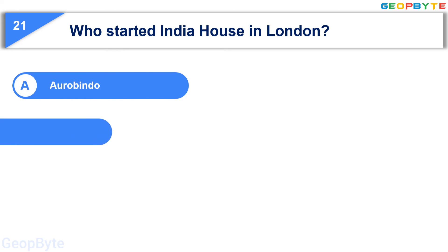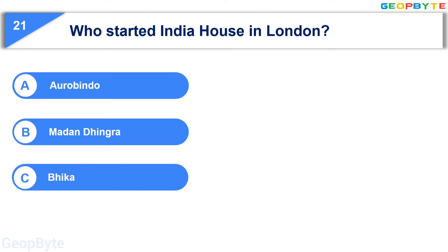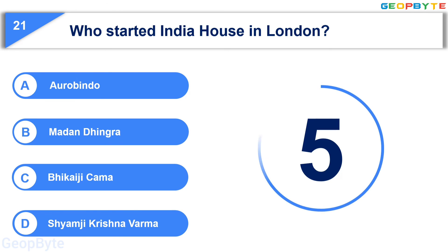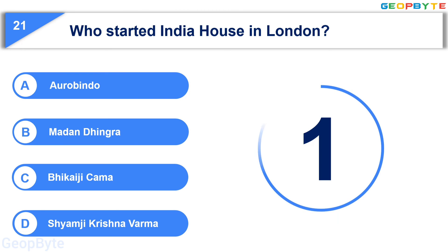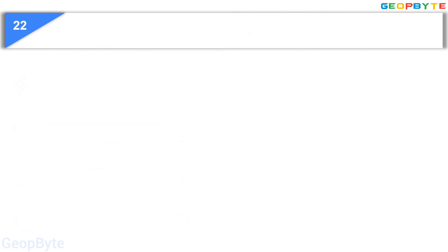Moving to the twenty-first question: who started India House in London? Option A: Aurobindo, Option B: Madan Lal Dhingra, Option C: Bikaji Cama, Option D: Shyamji Krishnavarma. Your time starts now. Your time is up and the correct answer is Option D: Shyamji Krishnavarma.